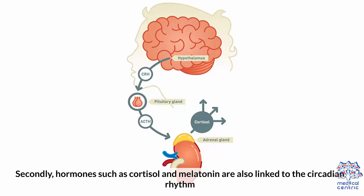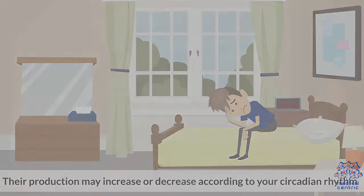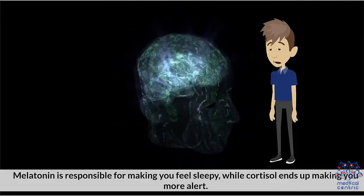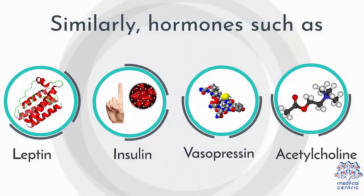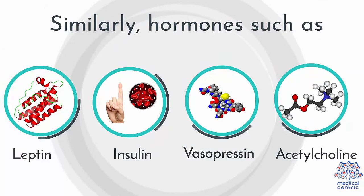Secondly, hormones such as cortisol and melatonin are also linked to the circadian rhythm. Their production may increase or decrease according to your circadian rhythm. Melatonin is responsible for making you sleepy, while cortisol ends up making you more alert. Similarly, hormones such as leptin, insulin, vasopressin, and acetylcholine are also tied to the circadian rhythm.